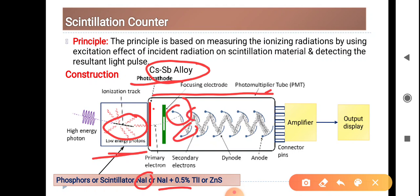Inside, the secondary electrons will multiply. These are known as photomultiplier or electron multiplier, and this is connected with the amplifier and output display.